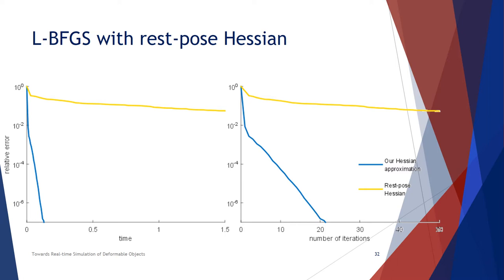In more general cases where all elements can depart further away from their rest poses, not only from rotation, but from shearing, stretching, twisting, bending, and so on as well, the rest-pose Hessian will work even worse, as shown in the yellow line, compared to our Hessian approximation, as shown in the blue line. Here, the vertical axis is the relative error of the objective energy in logarithm scale, and the horizontal axis on the left figure is the time in seconds, and on the right is the number of iterations. We can see that our method excels in both measurements.